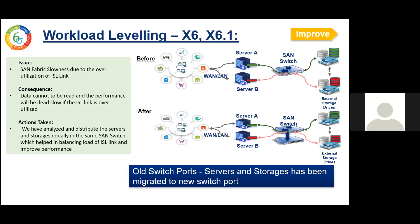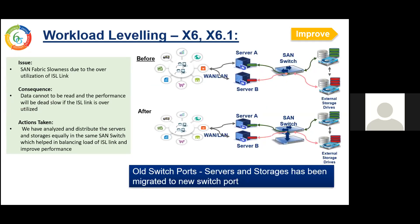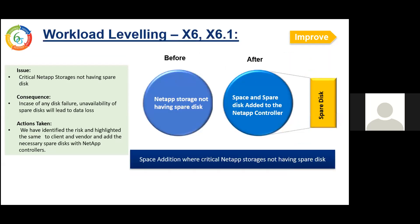Another solution is workload leveling of ISL links. As highlighted, all internet-based applications flow via server, SAN switch, and storage. There were certain ISL links that were over-utilized, causing a huge bottleneck to application flow. Since some critical servers were running multiple databases on the same server requiring more data bandwidth for read and write operations, we identified and enabled additional links between the switches, servers, and storages. Data retrieval between server and storage will now happen via two SAN switches since we enabled multiple ISL links. Additionally, spare disk unavailability causes outages and data loss — we identified NetApp storages without enough spare disks and added the required spare disks for business continuity.